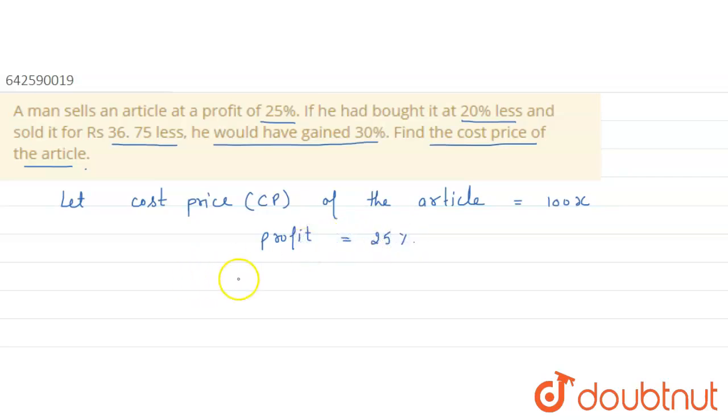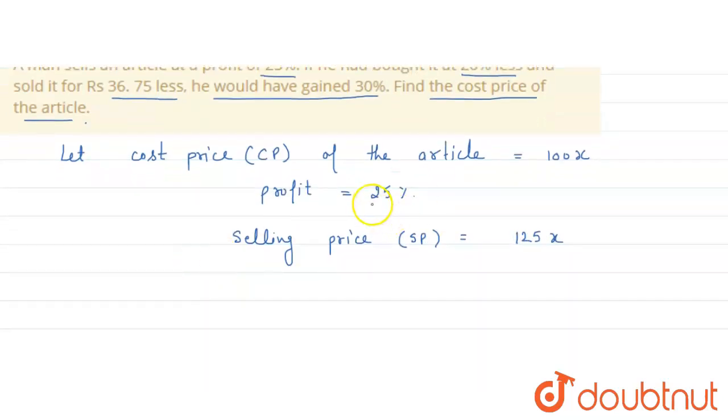Then I can say selling price, represented by SP, is equal to 125x. Now, because 25% of 100x is 25x, add 25x to 100x, we get 125x as the selling price.